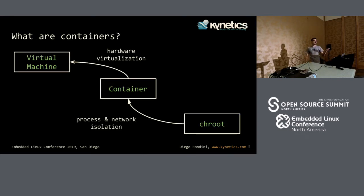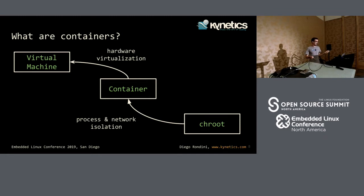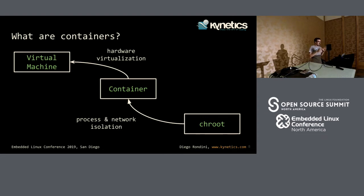You already know what containers are, but here's what we need to pay attention to. The difference from virtual machines is that containers don't have hardware virtualization — the kernel runs on the host operating system, it's not part of the container. On the other side, in chroot, you don't have the process and network isolation you have in Docker, so you are running in the same process space.